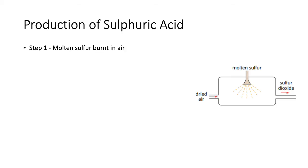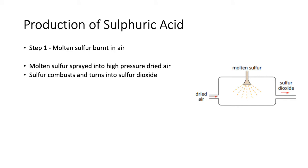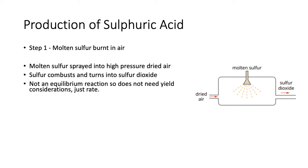So, step one: the molten sulfur is burnt in air. What they do is take molten sulfur and spray it into high-pressure dried air, and it will react with the oxygen only. The sulfur combusts and turns into sulfur dioxide. It's not an equilibrium reaction, so it does not need yield considerations — just rate. These things are going to have enough energy to turn into sulfur dioxide, and it's not going to turn back into molten sulfur and dried air.